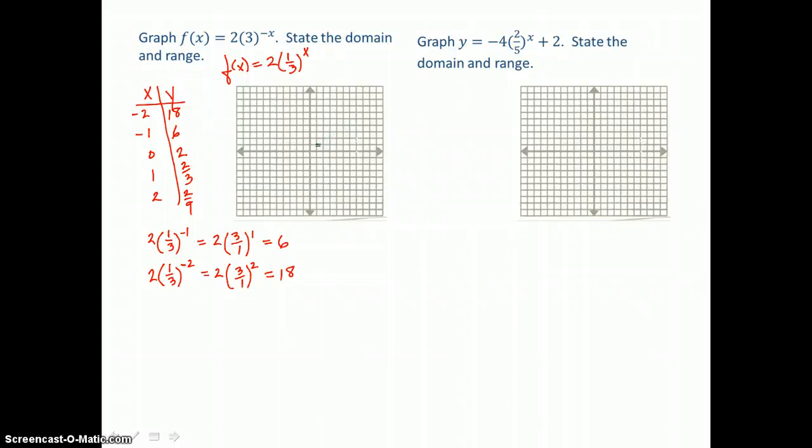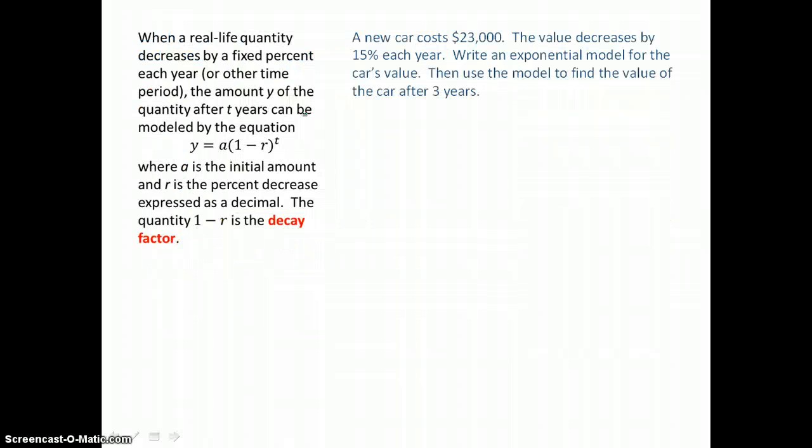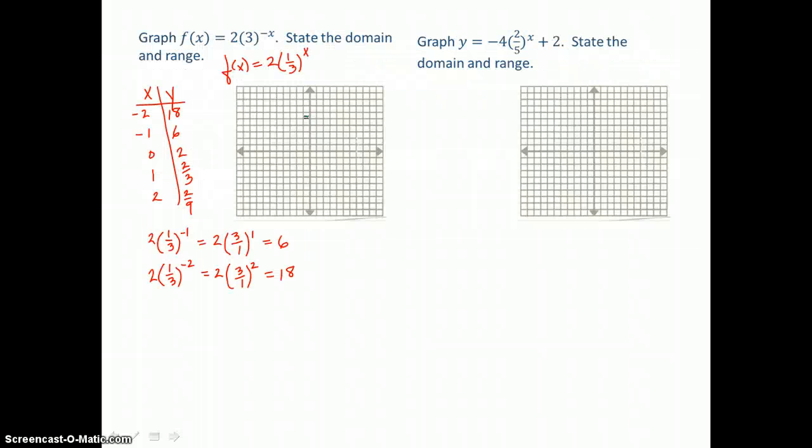And now when I go to the graph to graph those ordered pairs, negative 2, 18 is going to be off of my coordinate plane. So I'm going to start with negative 1, 6. And then I'll graph the y-intercept of 0, 2. And I'll graph 1, 2 thirds. And 2, 2 ninths. I'm getting close to that x-axis again.